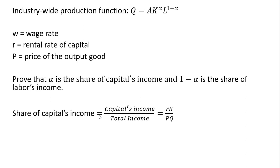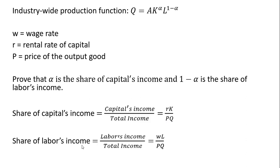The share of capital's income is going to be capital's income divided by total income, where the income to capital is the price of capital times units of capital, and total income in the economy is the price of the output good times the number of units of that output good. The share of labor's income is going to be labor income — which is the wage times units of labor — divided by total income.